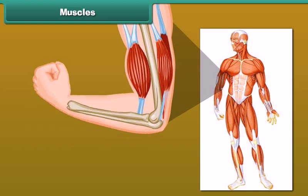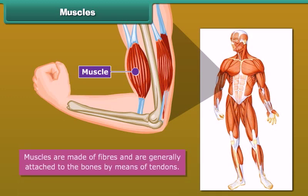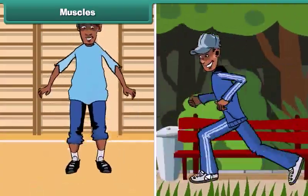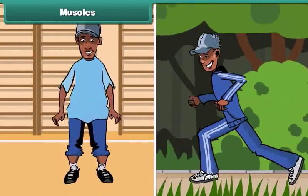Friends, make a tight fist and bend your arm at the elbow. Feel your upper arm — it feels harder. This is called the biceps. The biceps are muscles. There are about 600 muscles present in an adult human body. Muscles are made of fibers and are generally attached to the bones by means of tendons. Muscles along with bones help to give shape to the body and also help the different parts of the body to make movements.